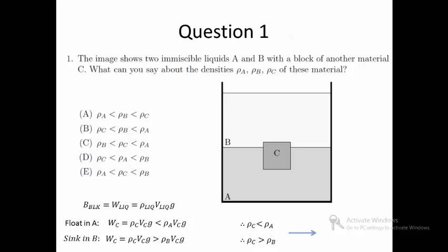Putting everything together, we have the relation, density of B is smaller than that of C, and that of C is in turn smaller than that of A. The answer is then C.